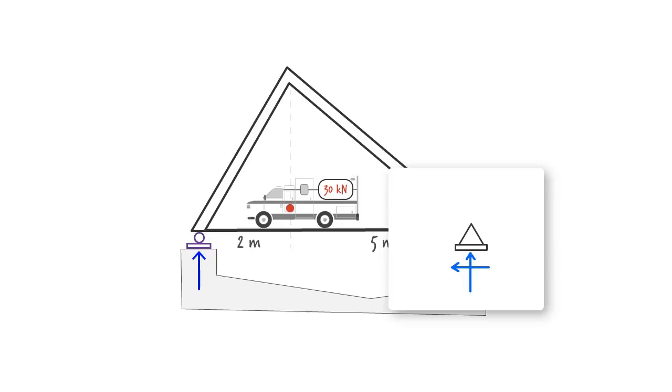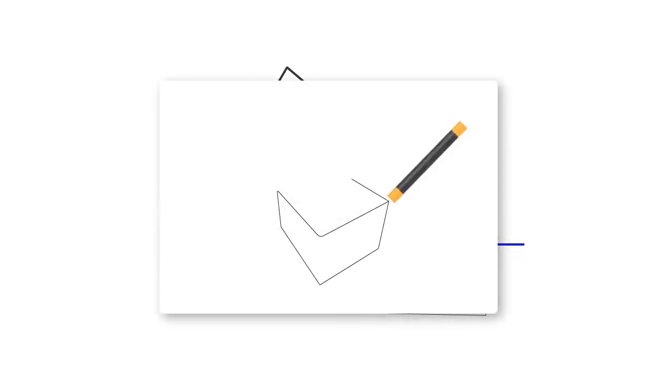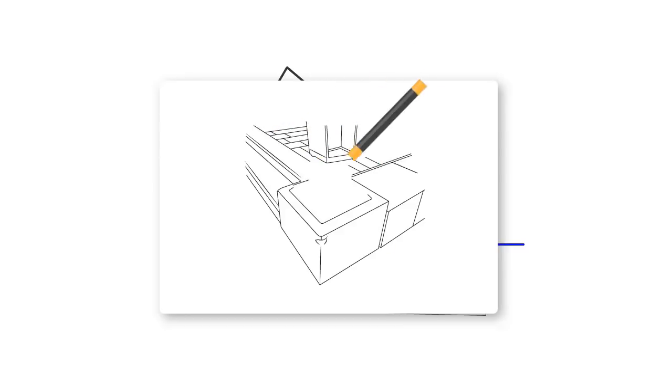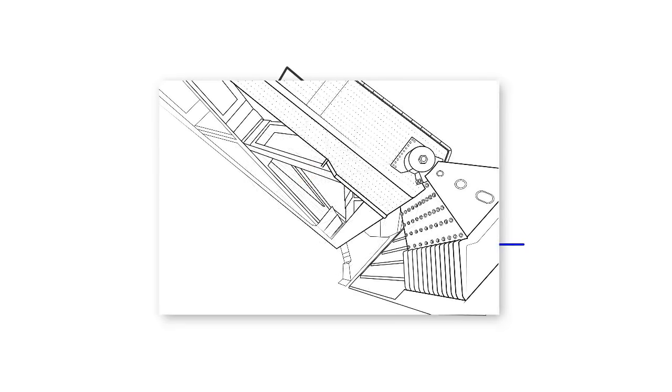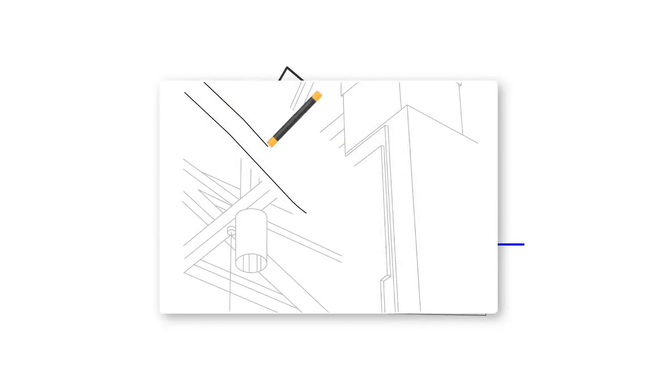So a pin support carries two forces only: a force in the X direction and a force in the Y direction. Here is an example of a pin support at the base of a column belonging to a frame. Here is a gigantic pin support at the base of a bridge. And here is a pin connection supporting a part of a roof structure.